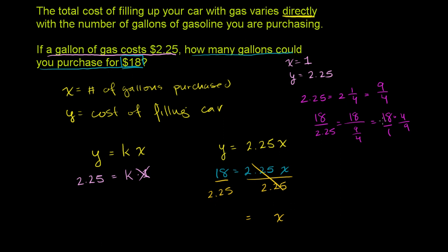And let's see. 18 divided by 9 is 2. 9 divided by 9 is 1. That simplifies pretty nicely into 8. So 18 divided by 2.25 is 8. So we can buy 8 gallons for $18.